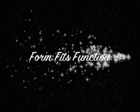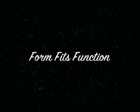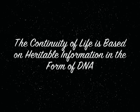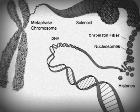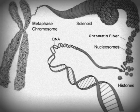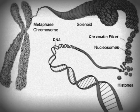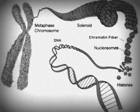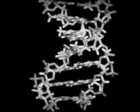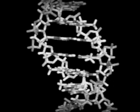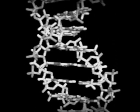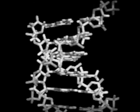Just remember: form fits function. The continuity of life is based on heritable information in the form of DNA. Remember that cell you started as? That cell contained vital information in its chromosomes. Chromosomes are made of chromatin, which are made of DNA. You inherited those chromosomes from your parents. All living things contain DNA. DNA is inherited by offspring from their parents, and it then helps you as an organism grow and develop.